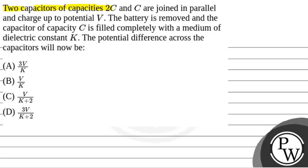The question says that two capacitors of capacities 2C and C are joined in parallel and charged up to a potential V. The battery is removed and the capacitor of capacity C is filled completely with a medium of dielectric constant K.